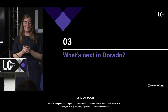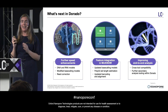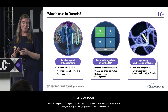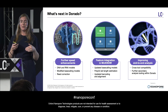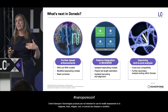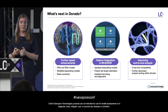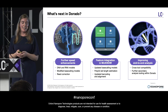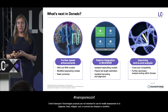What's next in Dorado? As always, we are trying to speed everything up — we want everything to be as fast as possible. We will be working on speed enhancements for the new models, making sure that despite the more computationally intensive architecture, we get the SUP model back to parity with the previous version 4.3 models. At the moment there's a little slowdown, but we'll be working hard to rectify that. We're also improving the speeds of the modified base calling models, read correction, and other tools within Dorado.